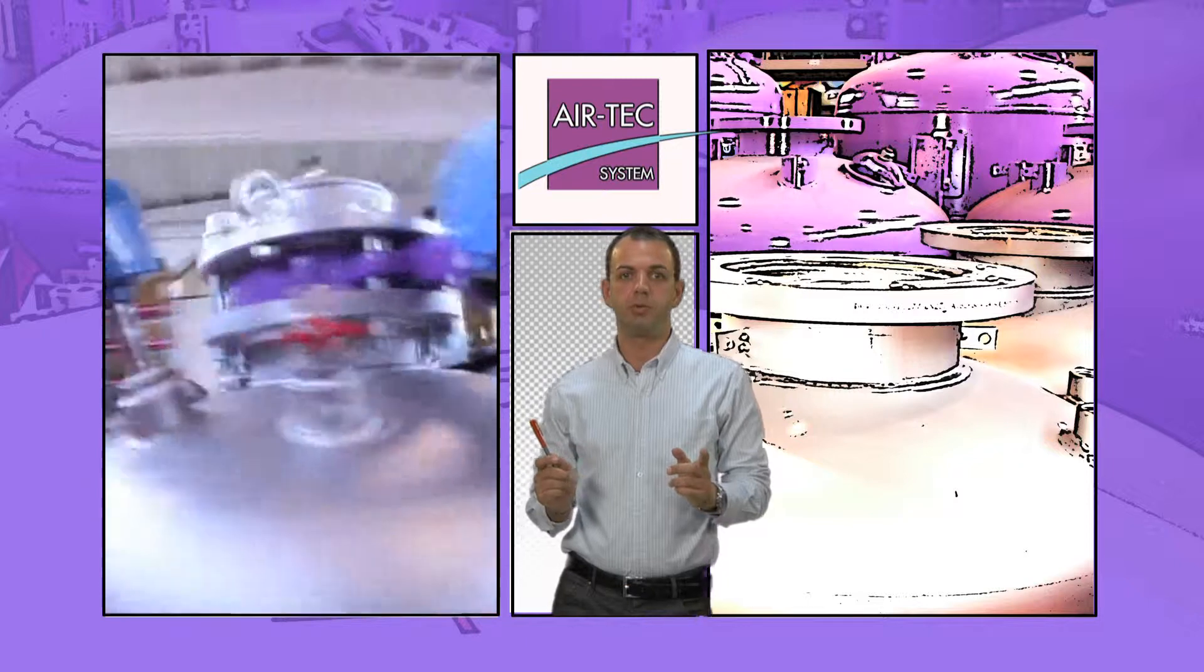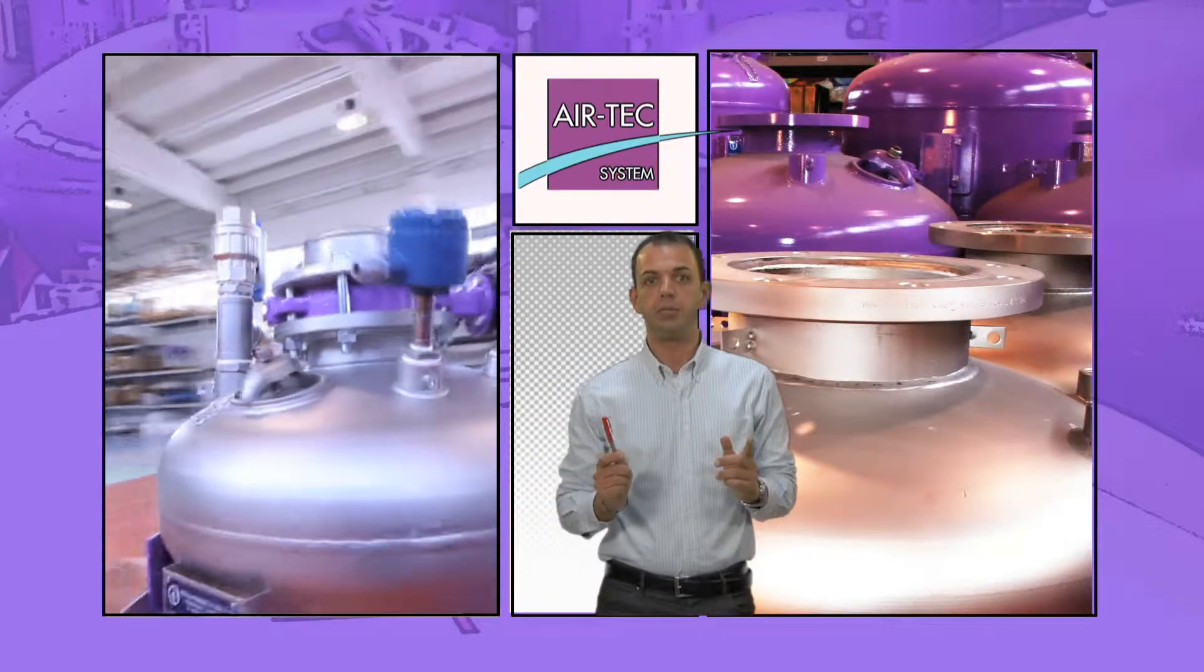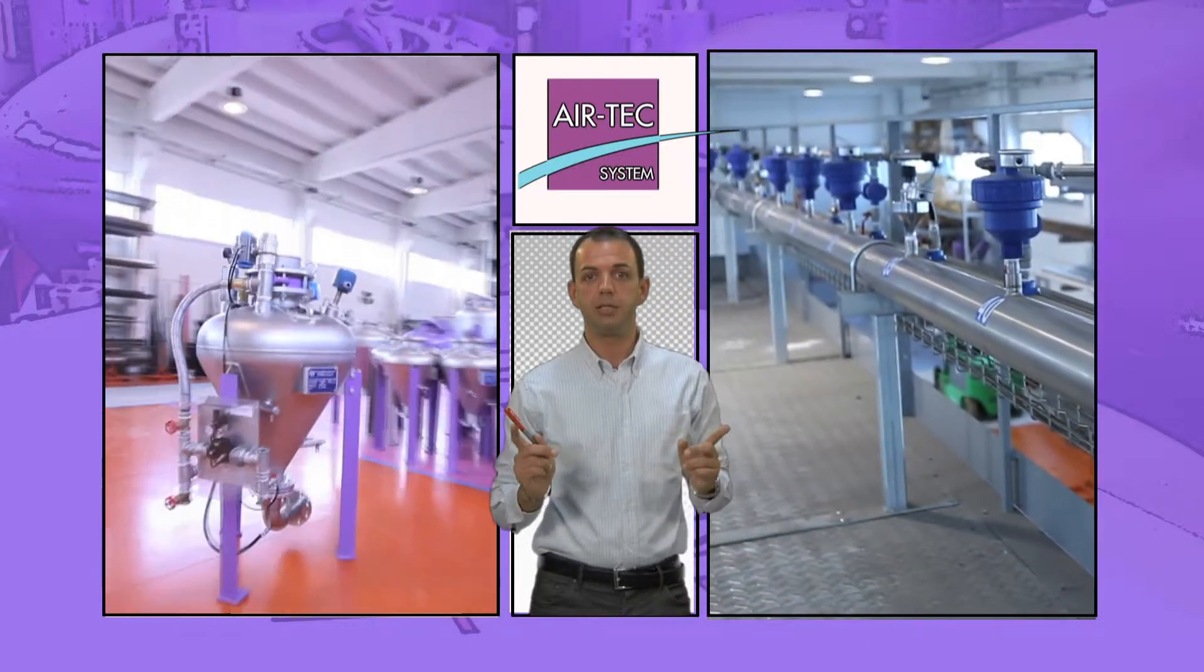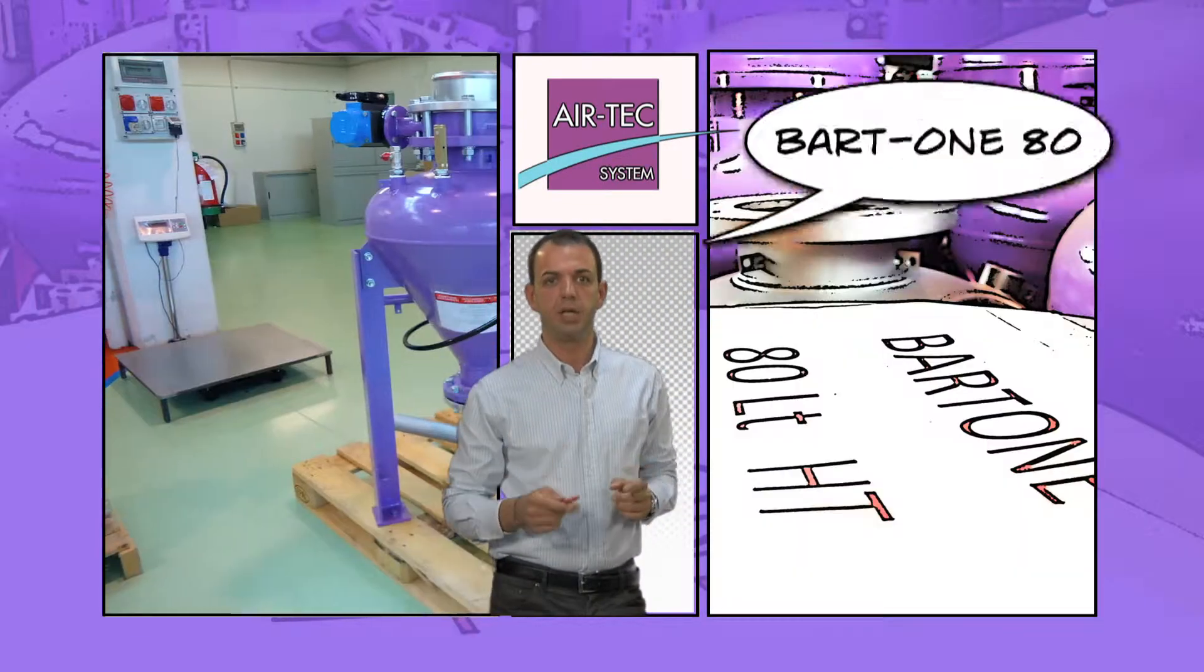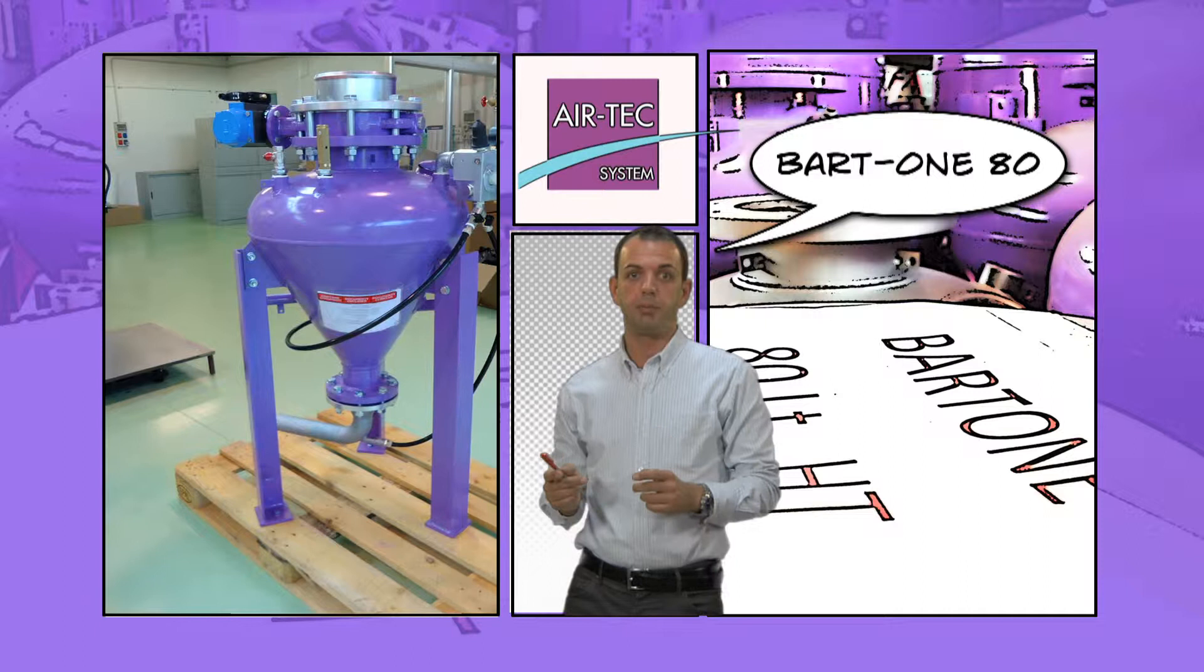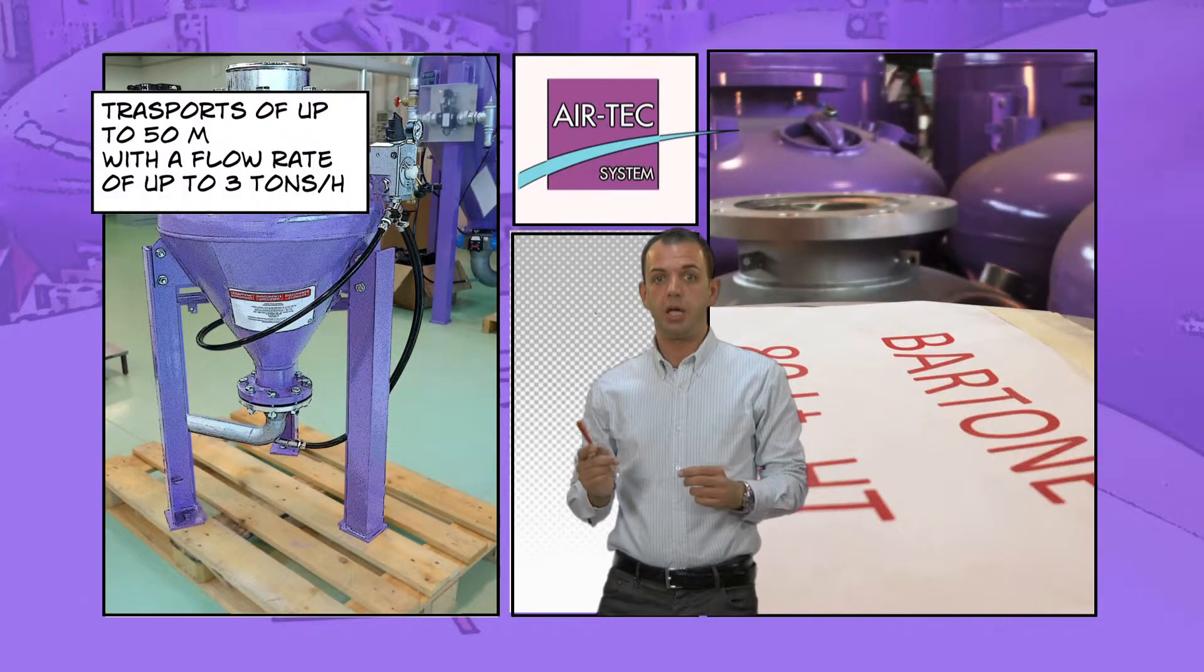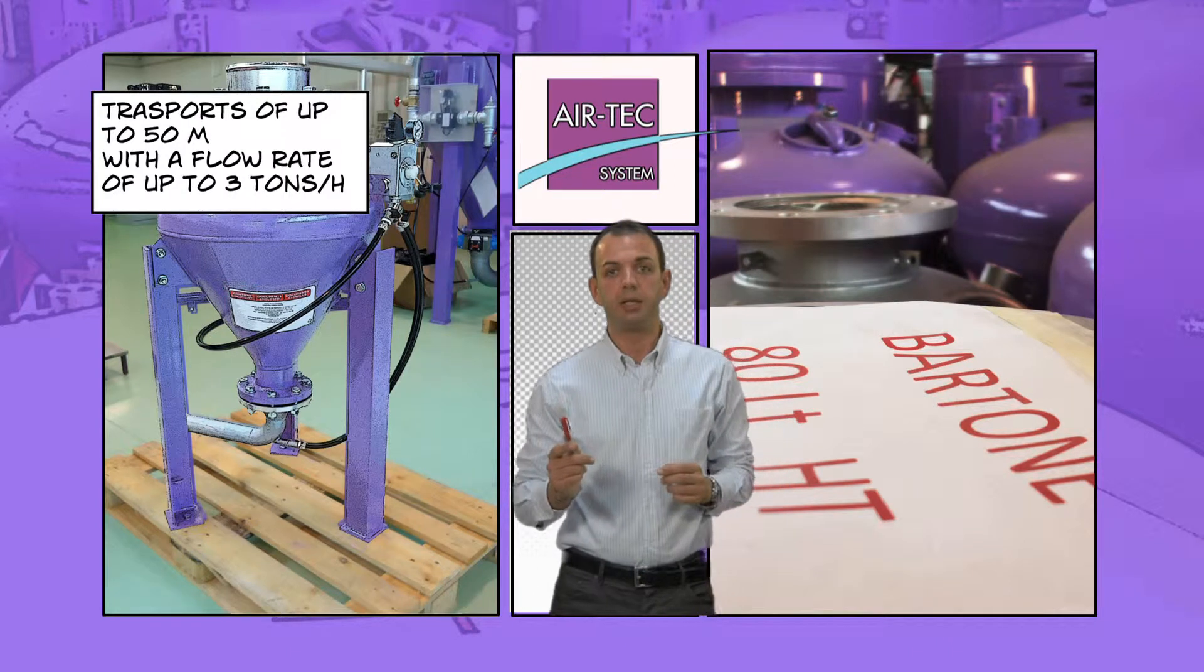Which BART 1 vessel to choose? To understand which model is best for specific needs, it is important to know the length of the route and the flow rate of the material. BART 1-80 with a capacity of 80 litres is suitable for transports of up to 50 meters with a flow rate of 3 tons per hour.